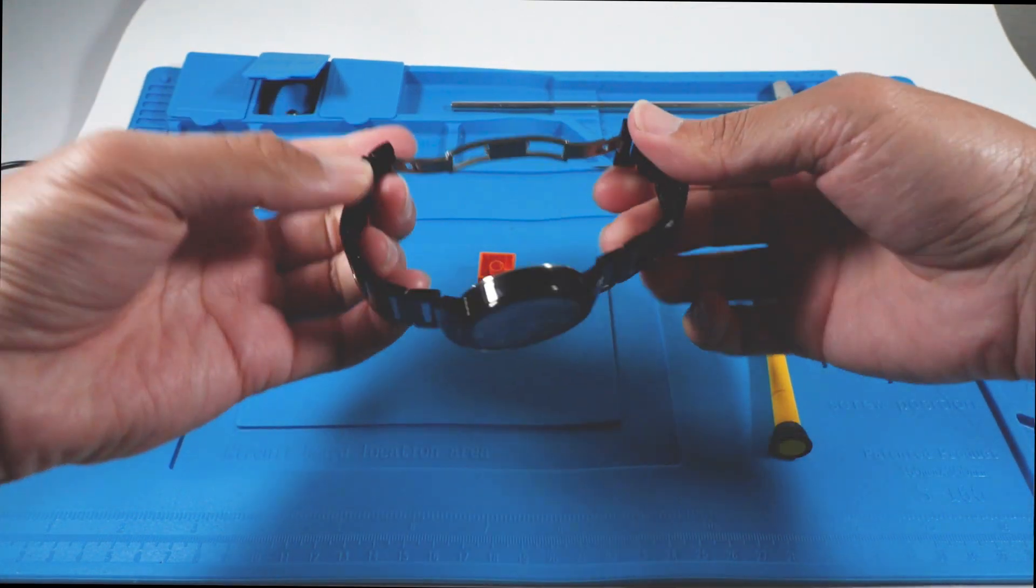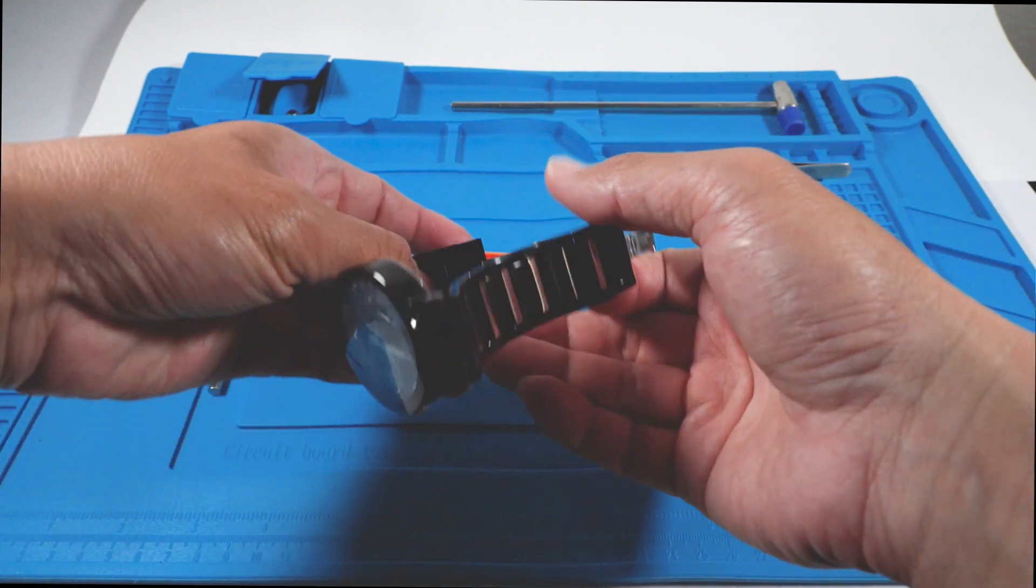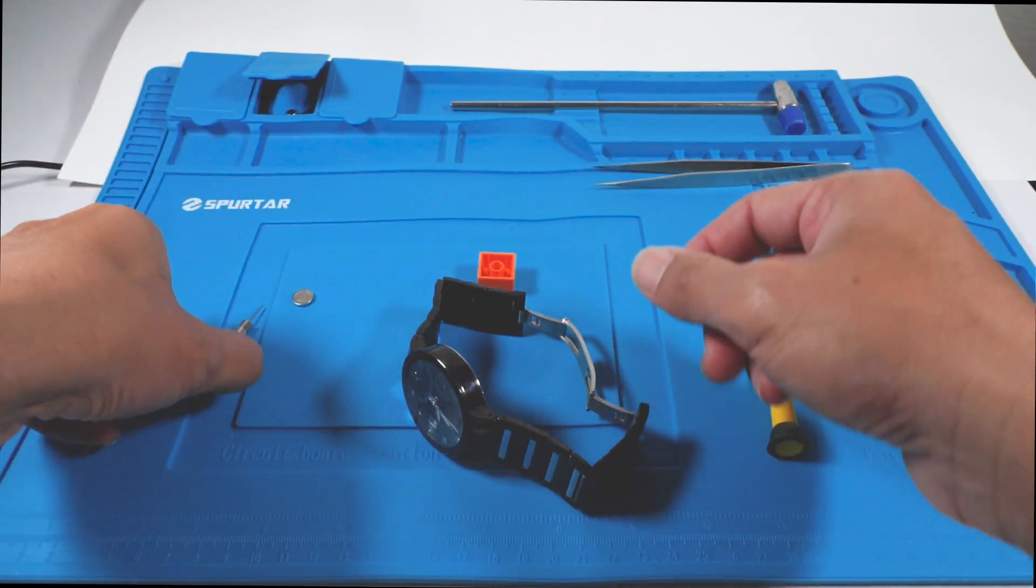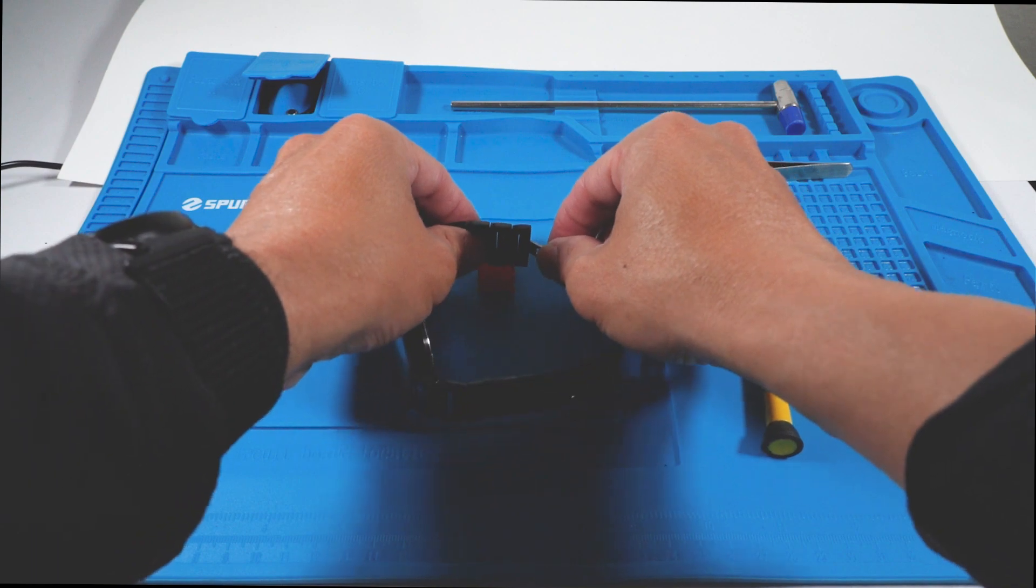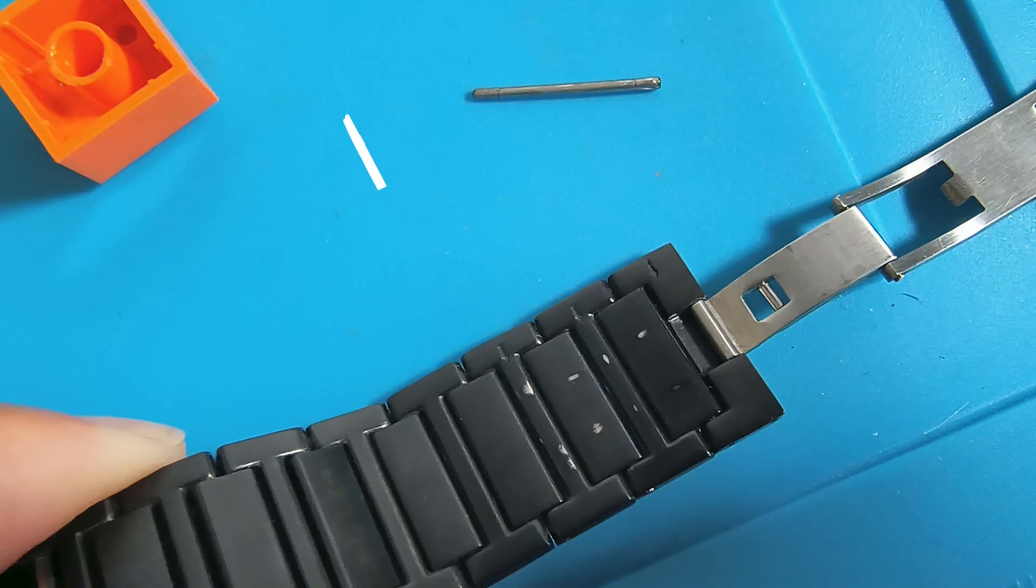The first thing we're going to do is open up the bracelet so that we have easy access to the back of the watch. Look on the inside for some arrows. We're going to punch a pin through in the direction of those arrows.